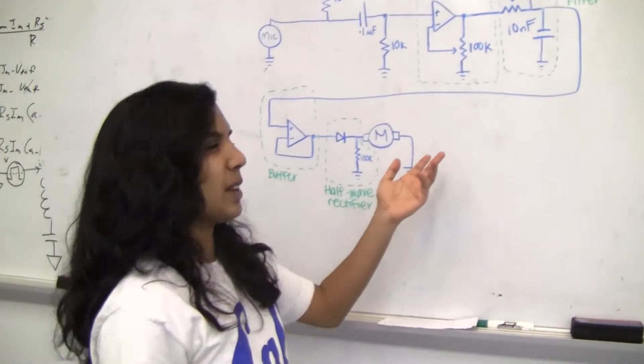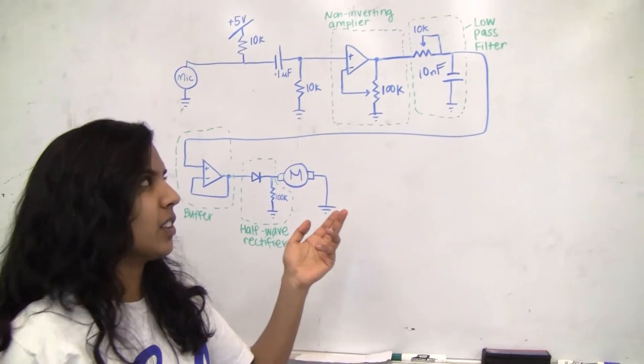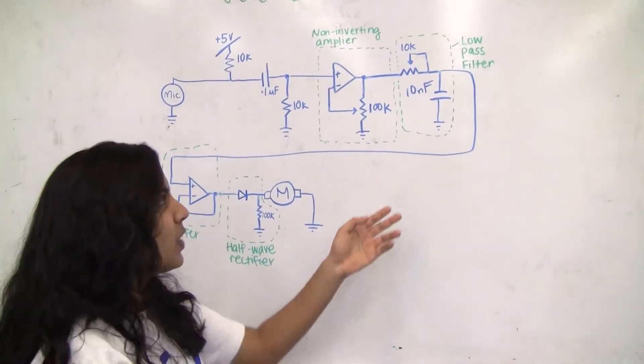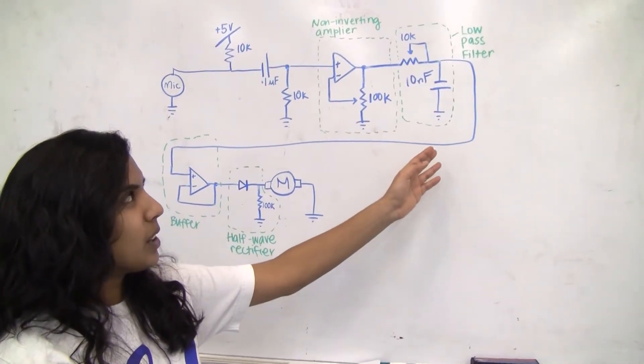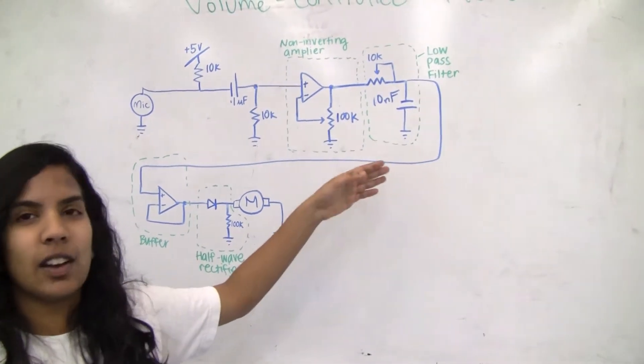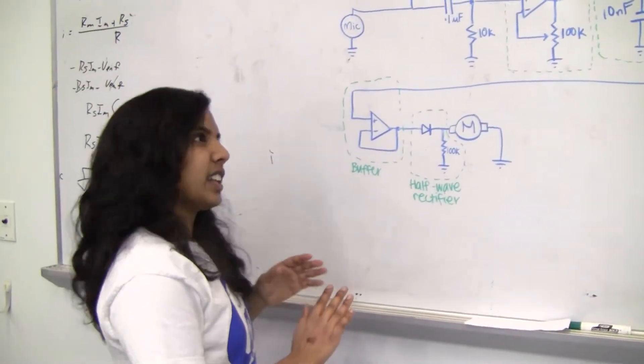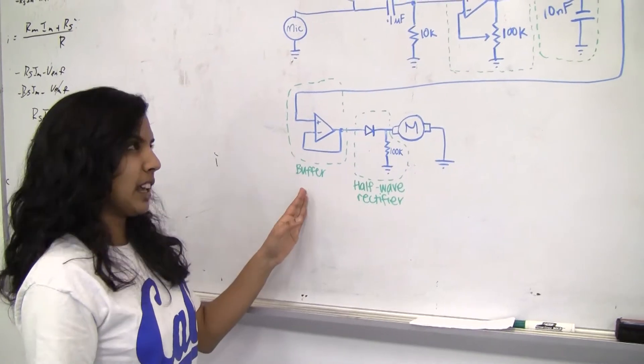Then we put that through a low pass filter to filter out high frequencies to give a smoother signal for the motor. Then we put that through a buffer and then a half wave rectifier.